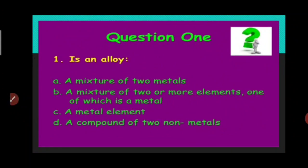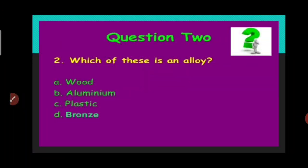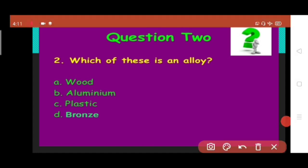First question is: Is an alloy a mixture of two metals, or is it a mixture of two or more elements one of which is a metal, or is it a metal element, or a compound of two non-metals? I hope you know the answer. It's B: an alloy is a mixture of two or more elements, one of which is a metal. Second question: Which of these is an alloy? Wood, aluminium, plastic, or bronze? Answer is bronze.